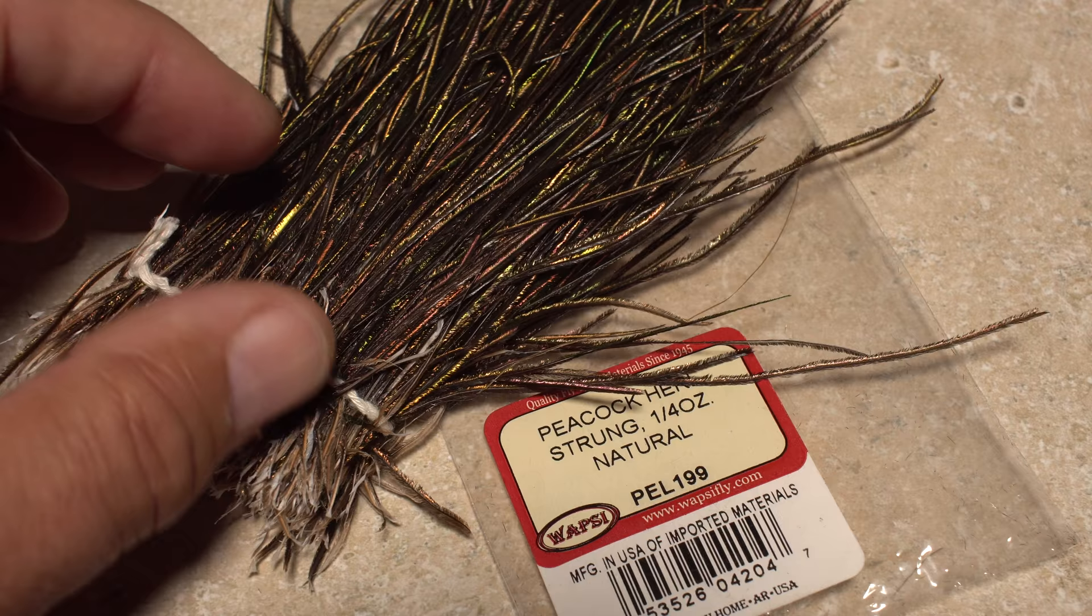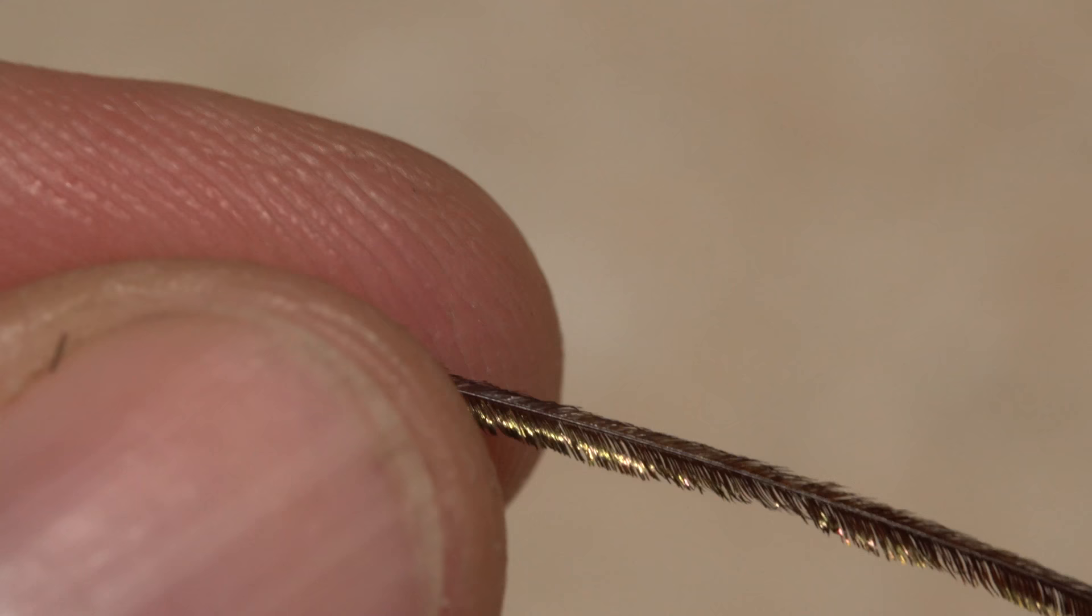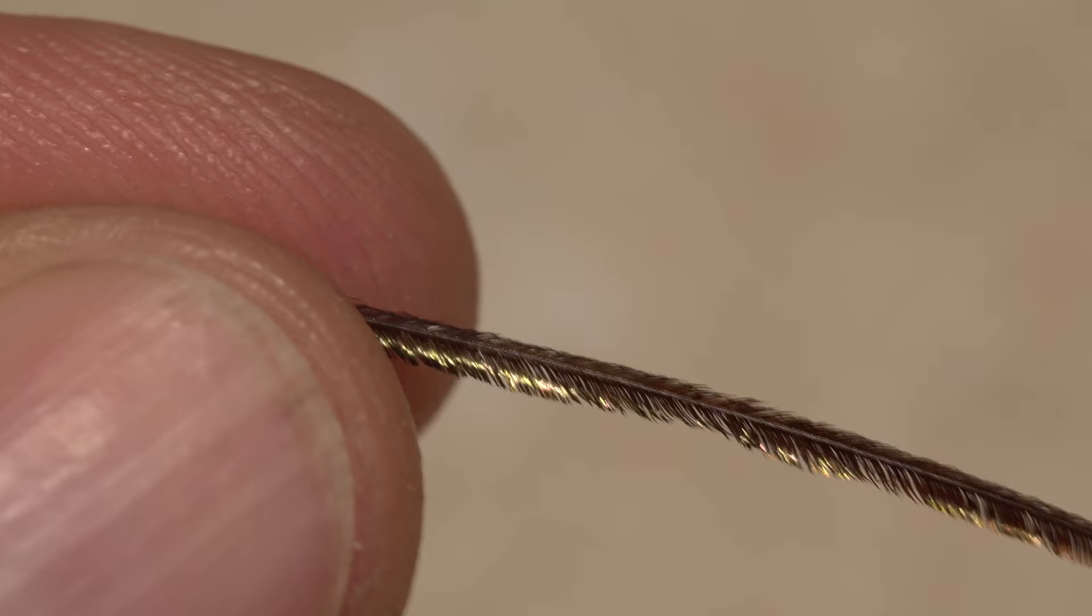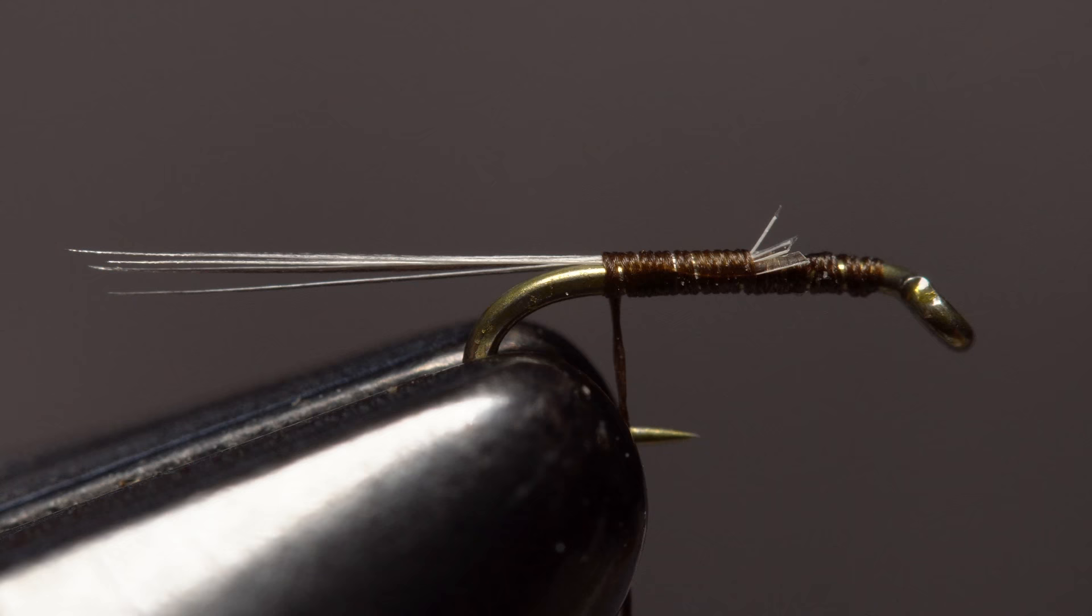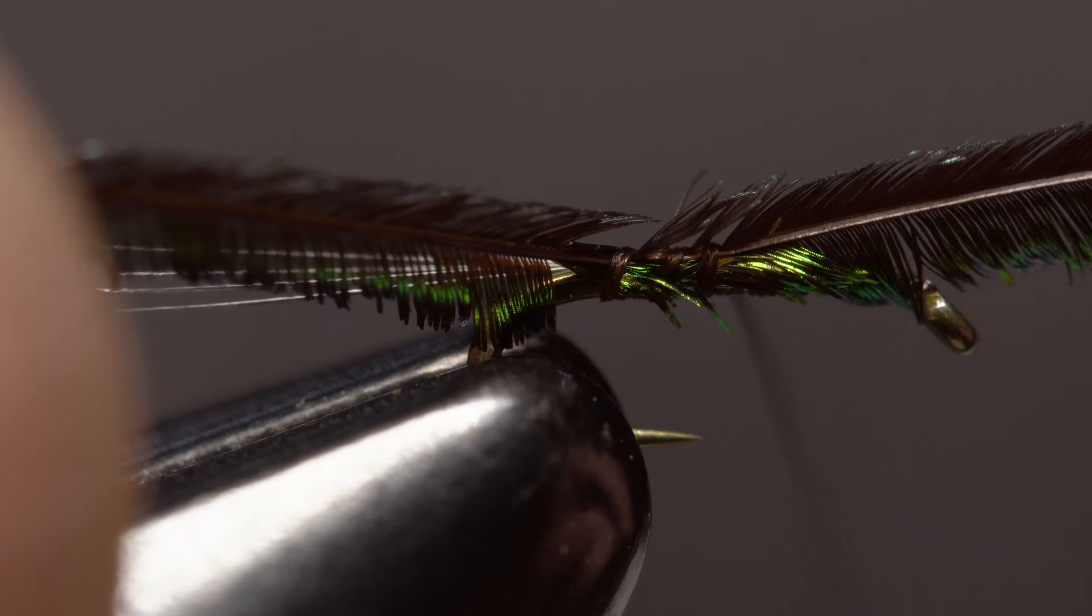The body of the fly is formed using peacock hurl. If you can, select one that has relatively small but uniform flues. Orient the hurl so the slightly longer, more iridescent flues are pointed down and forward. Then snip about an inch of the brittle tip off square. Maintain the hurl orientation as you lay it against the near side of the hook shank and take wraps of tying thread forward to secure it. Go all the way up to about an eye length space behind the hook eye. Lift the excess hurl up to vertical and snip it off close.